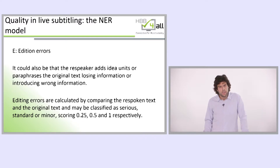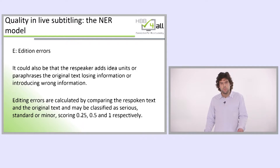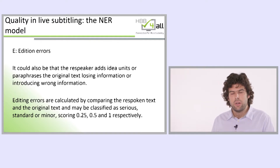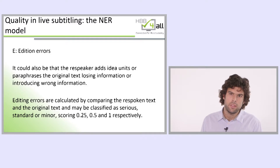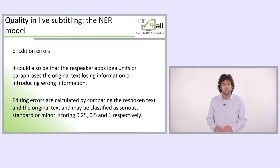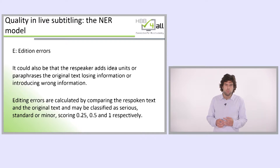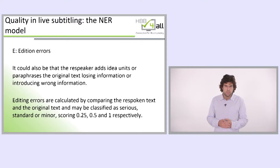Editing errors are calculated by comparing the respoken text and the original text, and may be classified as serious, standard, or minor, scoring 0.25, 0.5, and 1 respectively. Regarding addition errors, when we talk about idea units, they could be independent or dependent. Independent idea units are full sentences. Dependent idea units are part of sentences — they could be a time clause or a place clause. This distinction will be helpful to determine whether addition errors are minor, standard, or serious.